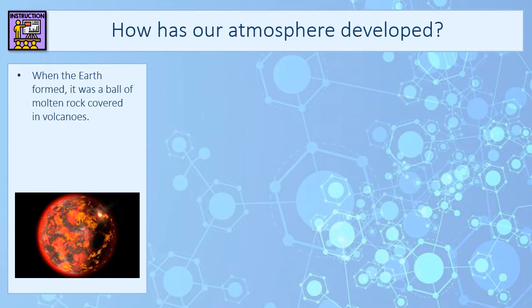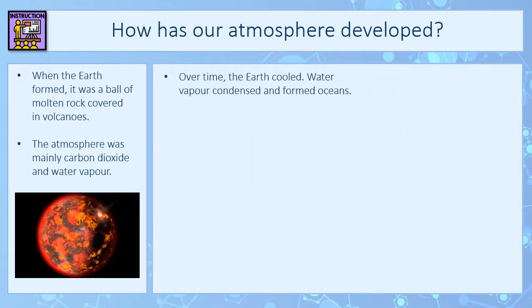There was no land as we would recognise it today, there were no oceans. The atmosphere around the earth was mainly carbon dioxide and water vapour. Over time the earth cooled down and when it cooled below 100 degrees water vapour could condense and form the oceans. The carbon dioxide that was in the atmosphere — a lot of it dissolved into those oceans when they formed.